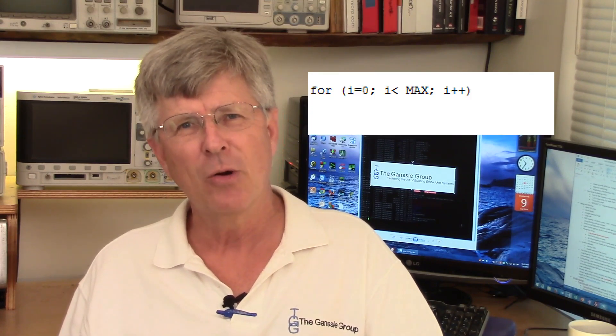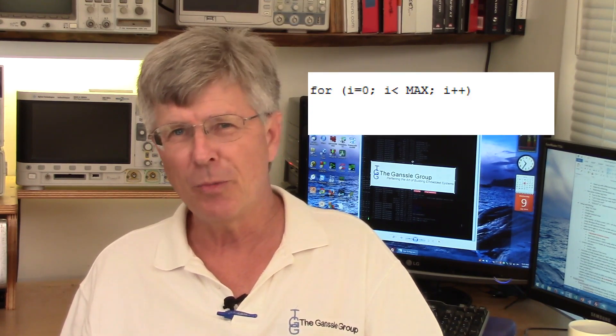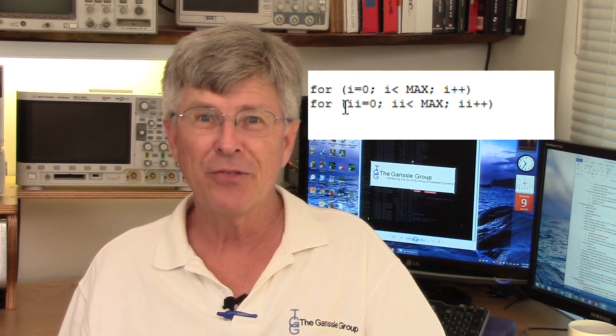Why is it that every index variable is named i, or for nested loops, ii, or my personal favorite, iii? Well, it goes back to Fortran 60 years ago, because with Fortran, variables starting with the letter i were the first of the default integers. And somehow we're still doing that, even though it doesn't really make a whole lot of sense anymore.